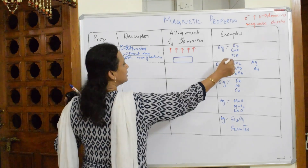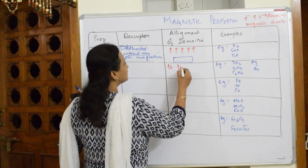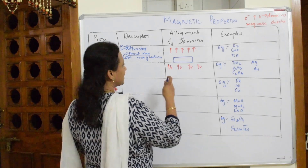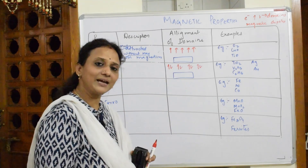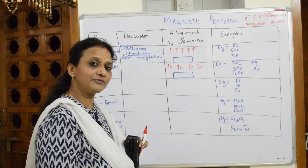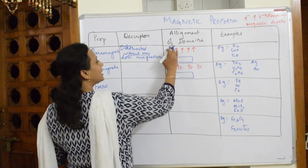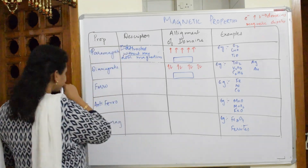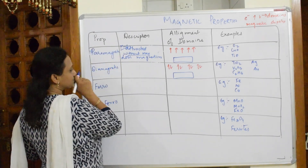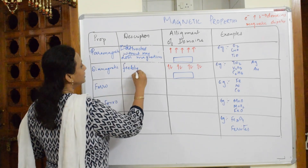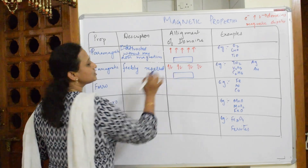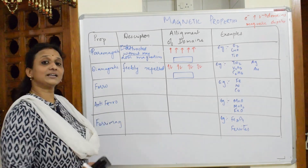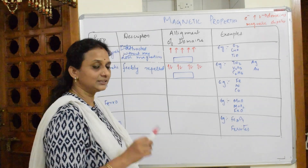For diamagnetic substances, all the domains are paired. When I place a bar magnet and observe, all domains are paired — so there is no possibility of domain alignment, and therefore no magnetic field is generated. Diamagnetic substances are feebly repelled because their magnetic dipoles or domains are all paired.